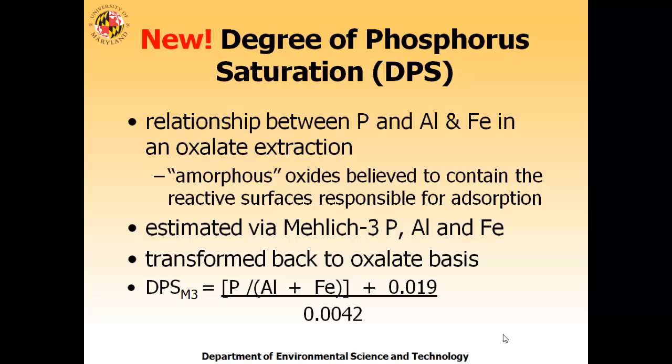For those with a high need to know—for the rest of you, it's in the software. If you put in phosphorus, iron, and aluminum, it will calculate this for you. And if your lab reports those things, they already have this calculation in their software.